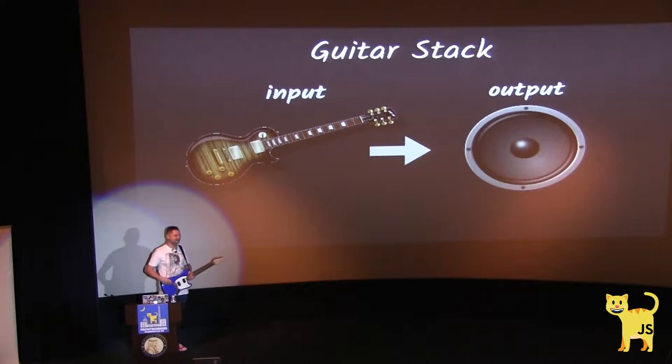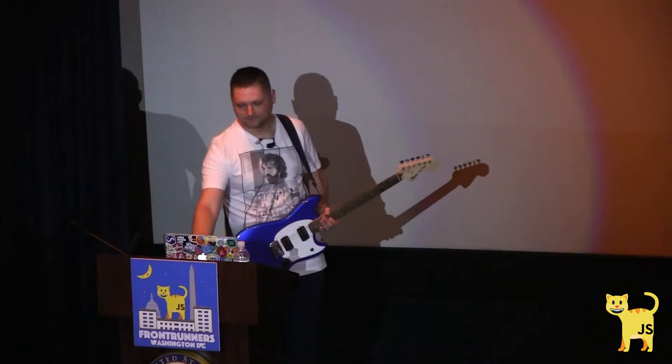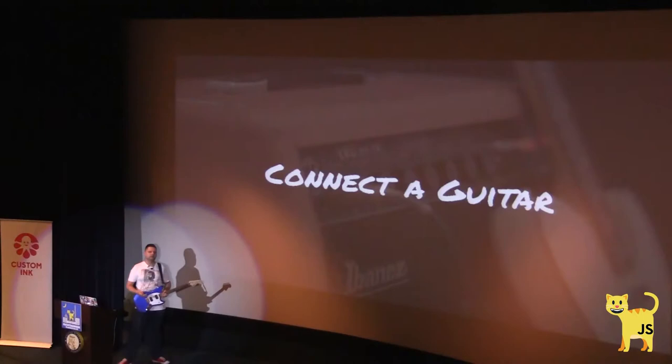If we're speaking about a guitar stack, we have a guitar which is our input, and output — some speakers, amplifiers, or cabinets. And between them we have these stomp boxes: guitar effects, distortions, overdrives, reverbs, whatever. So it looks pretty close.